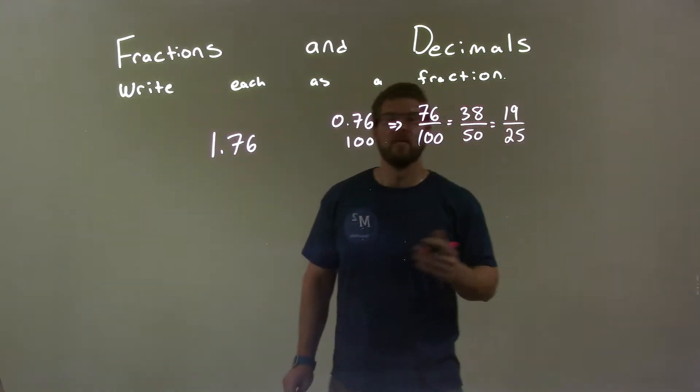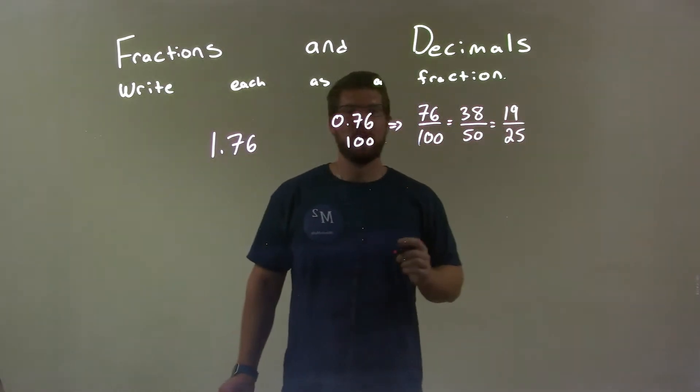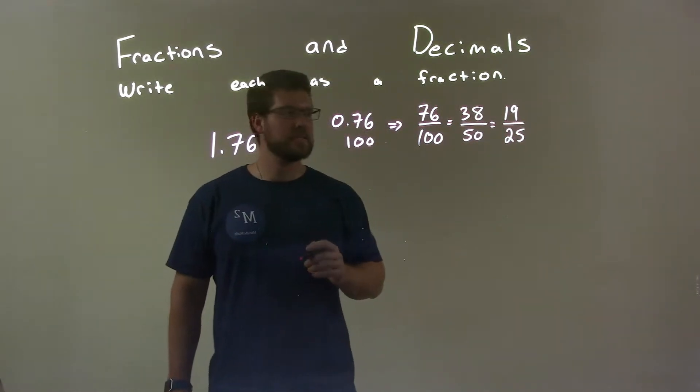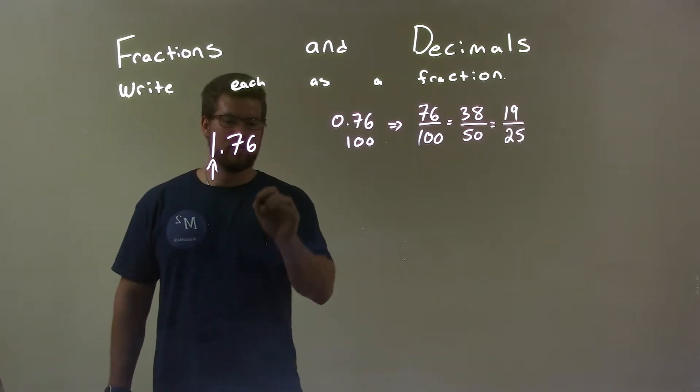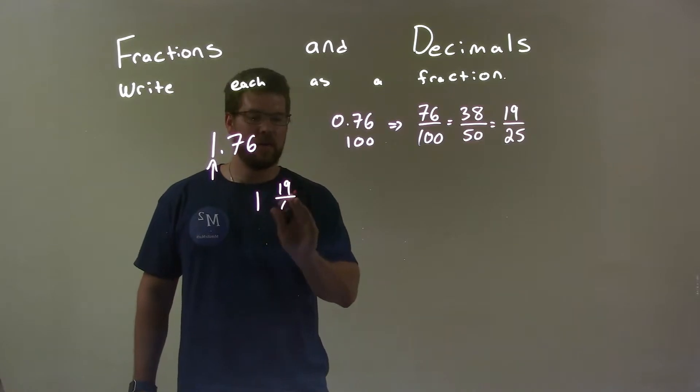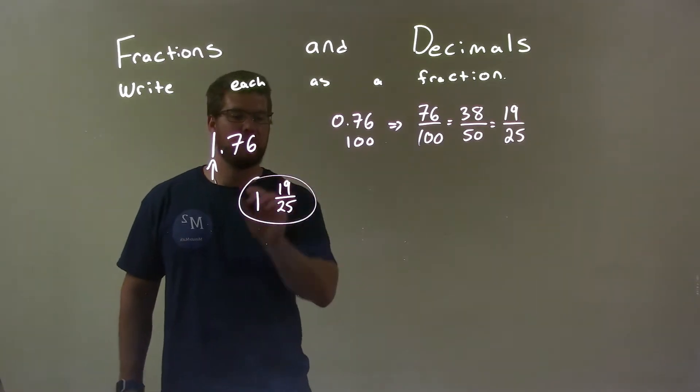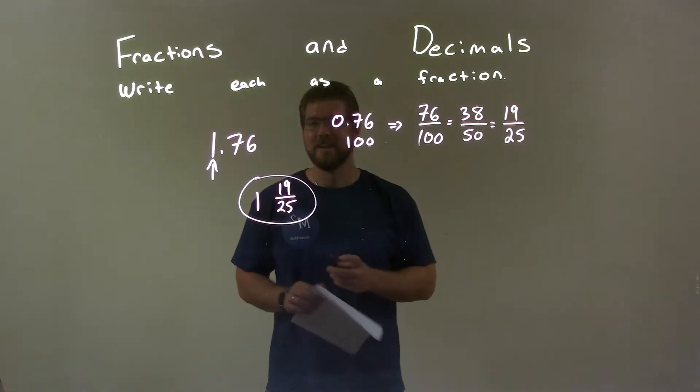And now there's nothing that goes into 19, so we're done. And so we have 19 over 25 represents 0.76. So it brings this one in as well. So we have 1, and then here the 19 over 25. And there we have our final fraction answer.